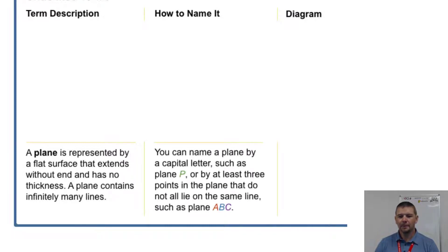How to name it? You can name a plane by a capital letter such as plane P, or by at least three points in the plane that do not all lie on the same line, such as plane ABC.